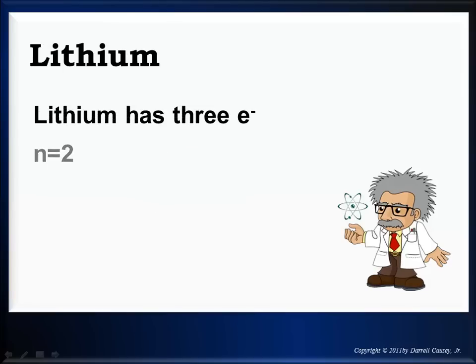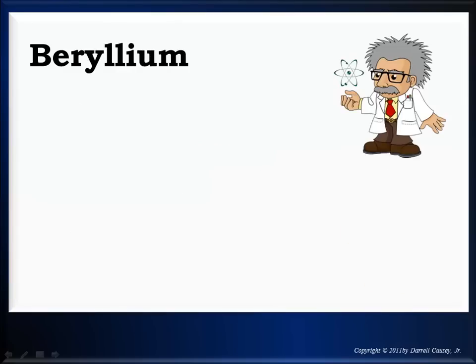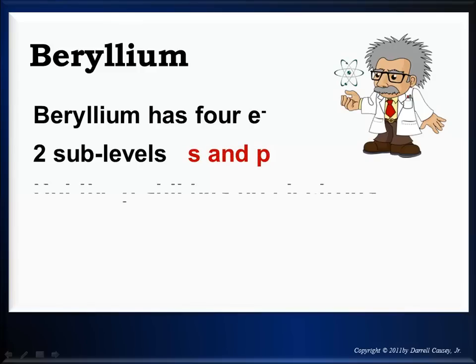Let's do lithium. Lithium now has 2 energy levels. 2 sub-levels in the second energy level, s and p. But p has no electrons yet. And we'll put our orbitals in. There's the first energy level and the second energy level. Now let's distribute the electrons. 1, 2, 3. Pretty cool. Beryllium has 4 electrons. And like lithium, 2 sub-levels, s and p in the second energy level. But the p still has no electrons. So put in our sub-levels. And there's the orbital notation for beryllium.